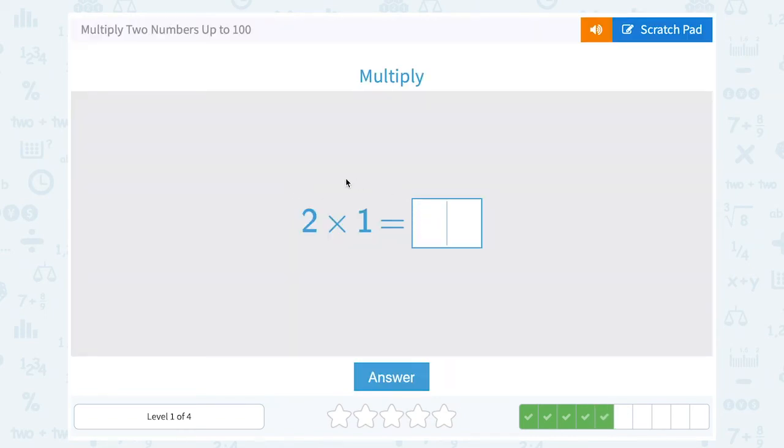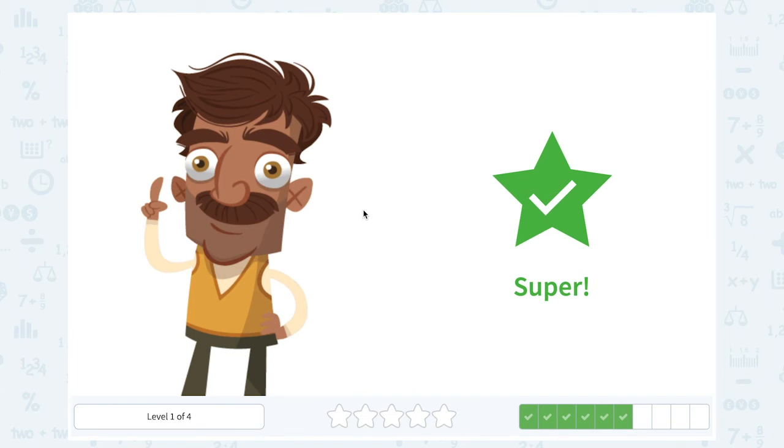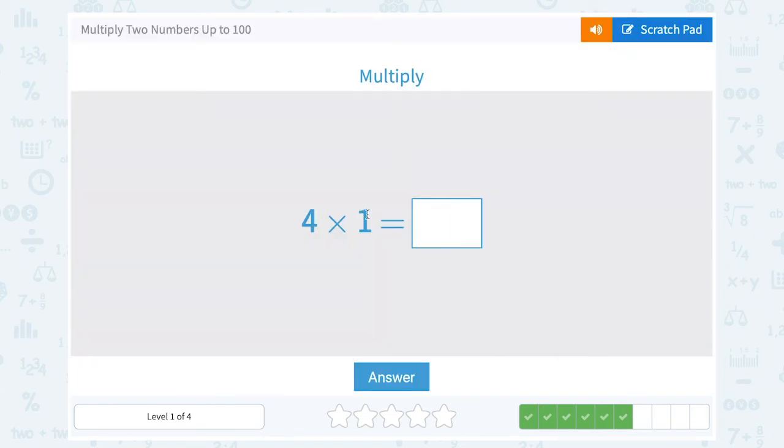Two times one. Well, anything times one stays the same, so two times one is just two. Four times one. Well, multiplying by one does not change our value, so four times one is just four.